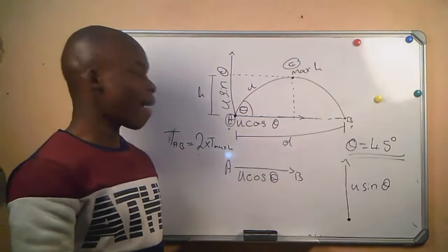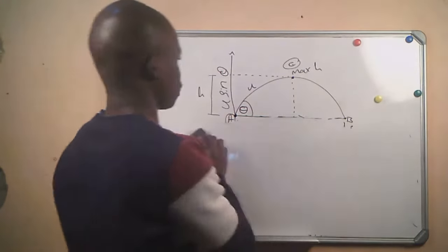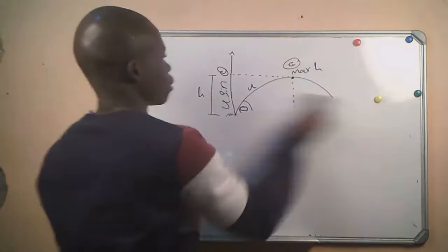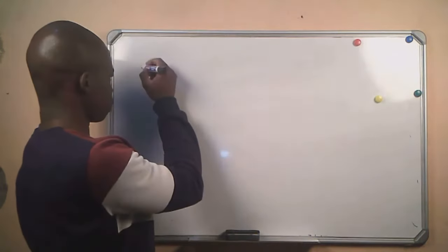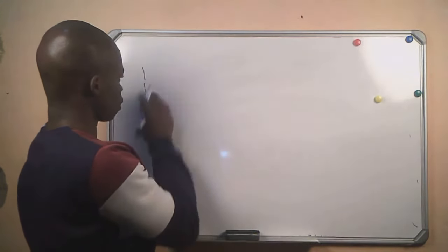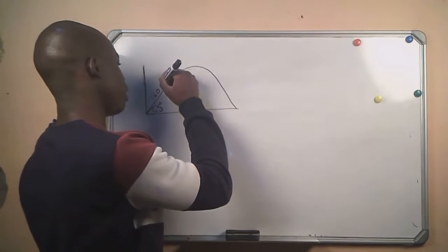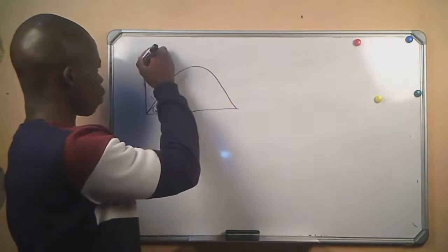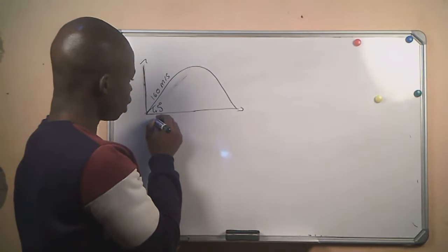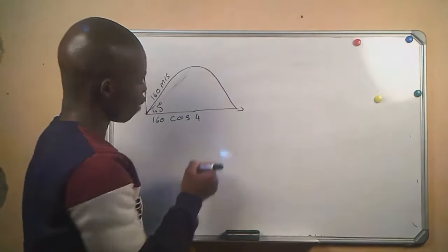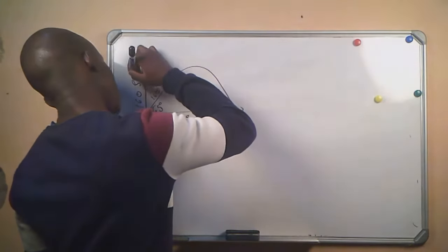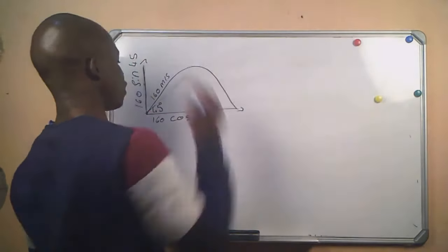I will erase this — hopefully you have copied — and we move to the question. An object is projected along a parabolic path at an angle of 45°, and the velocity of the object is 160 meters per second. From this we know the horizontal component will be 160 cos 45° and the vertical component will be 160 sin 45°.